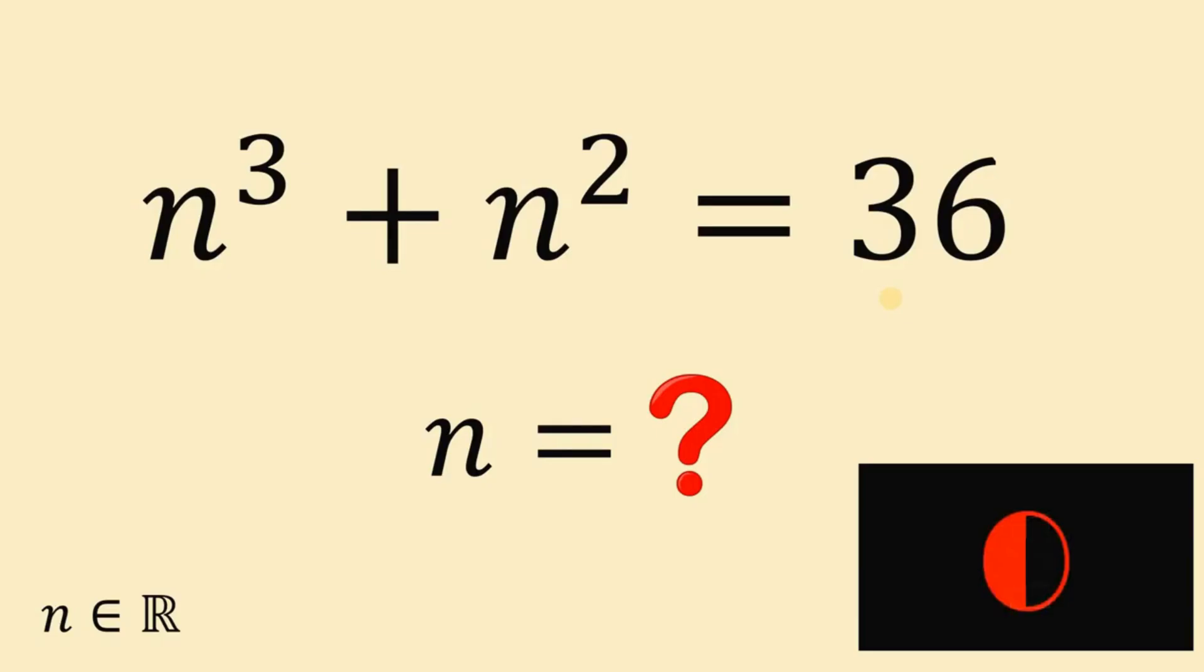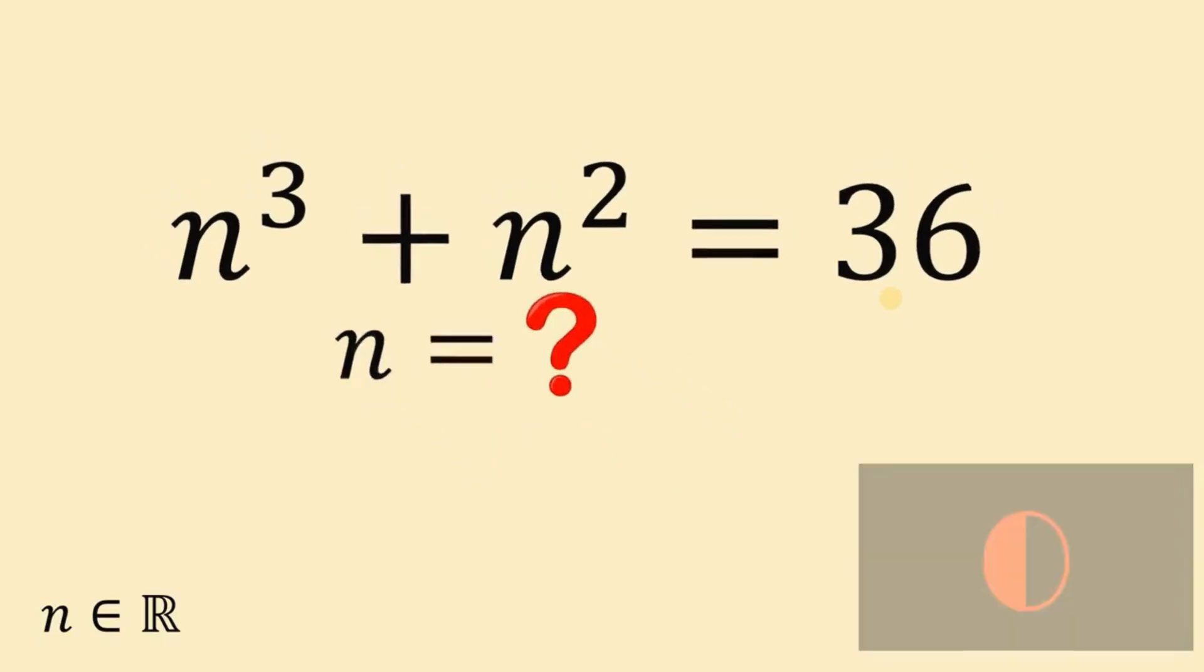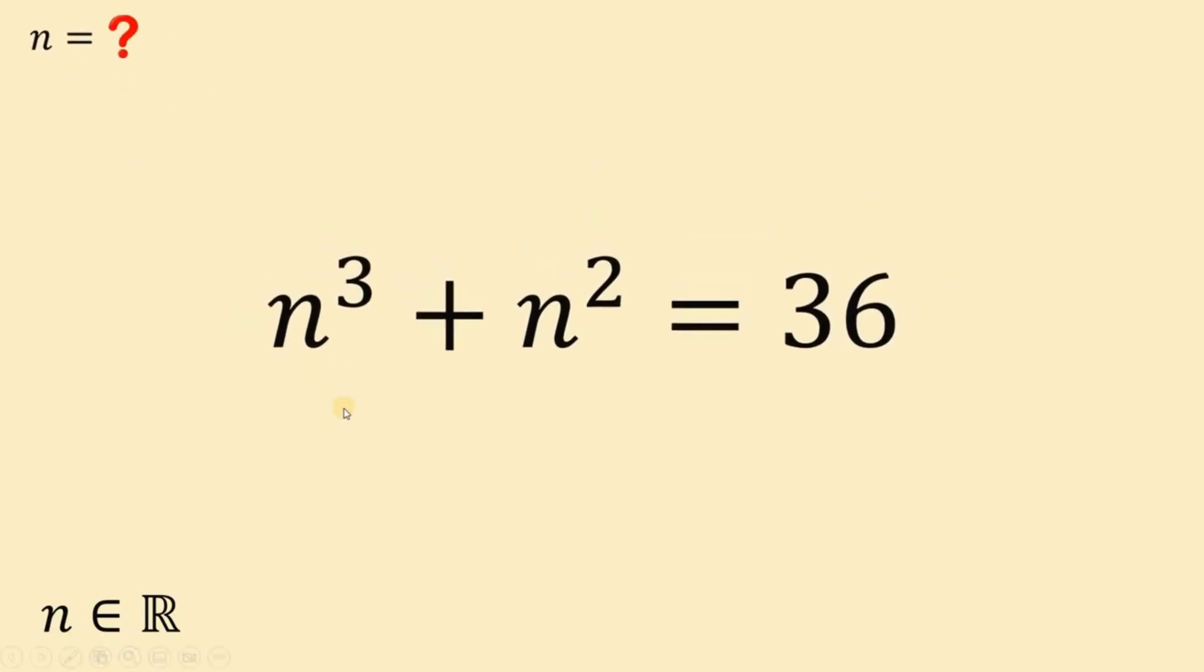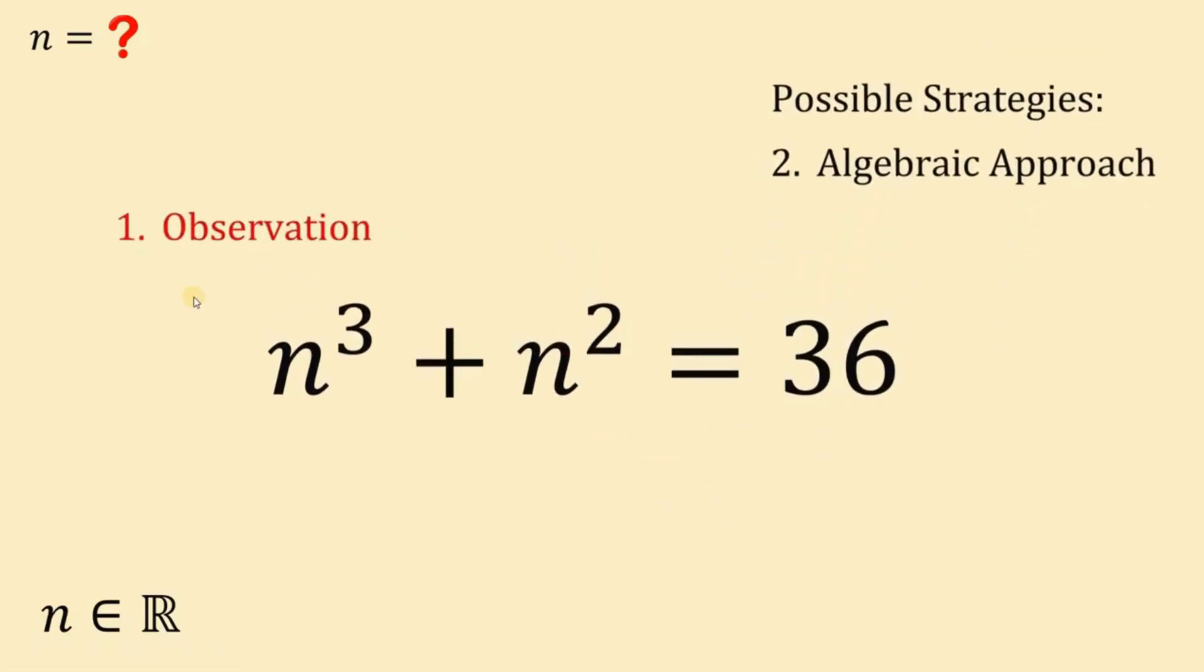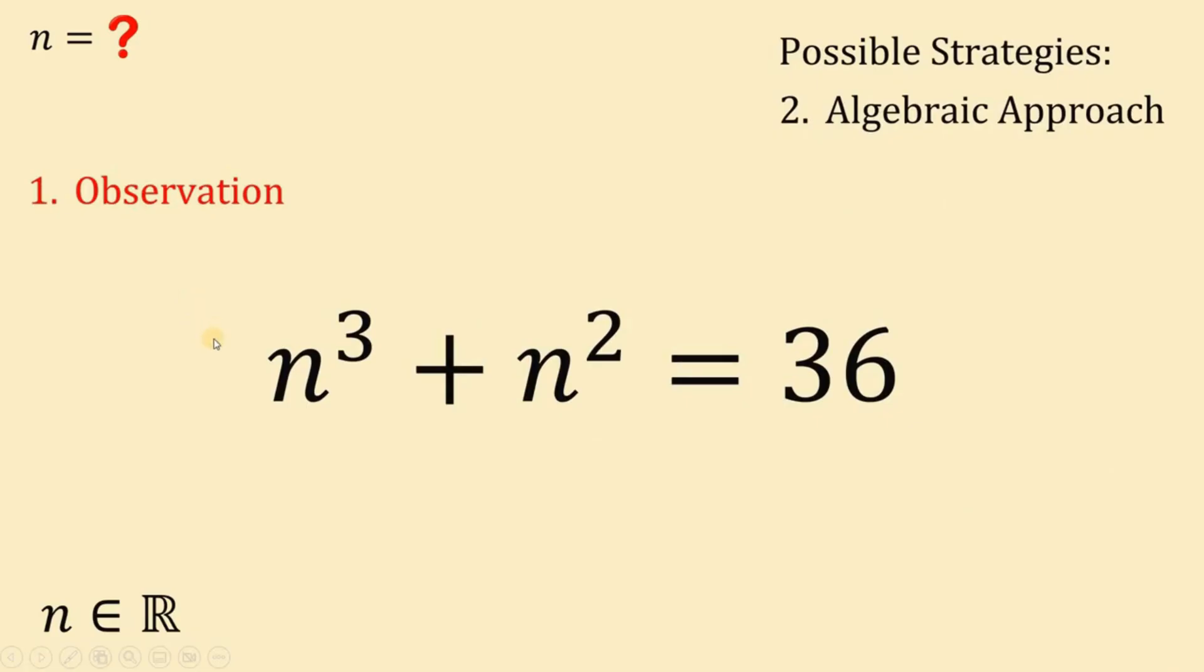And now, let's answer this question together. Our goal is to find a real value for n given this equation n cubed plus n squared equals 36. There are many ways to answer this kind of question and here are some possible strategies. The first one is by using observation. The second is by using algebraic approach. Now, let's first start the method which is all about observation.